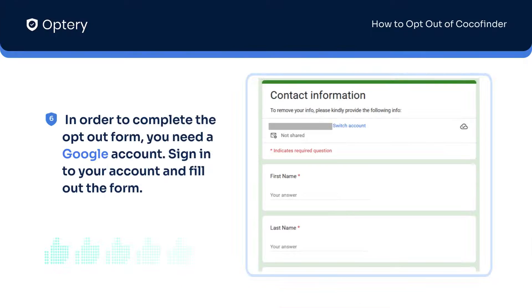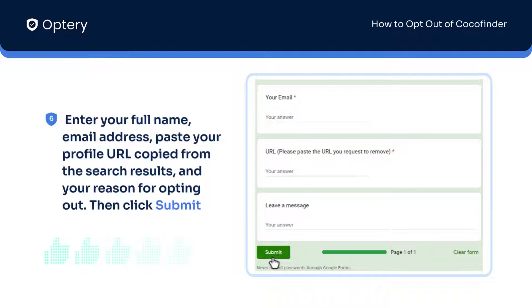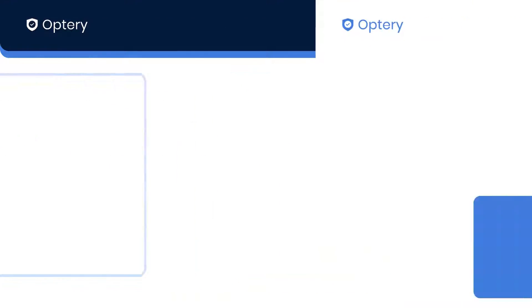In order to complete the opt-out form, you need a Google account. Sign in to your account and fill out the form. Enter your full name, email address, paste your profile URL copied from the search results and your reason for opting out, then click Submit.